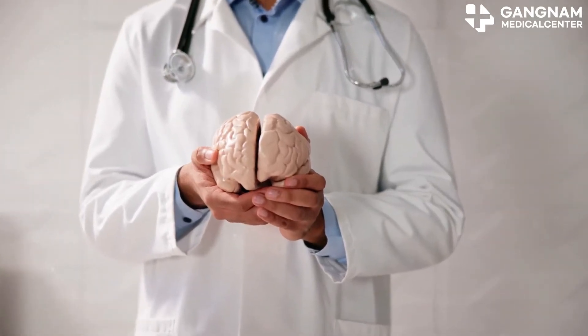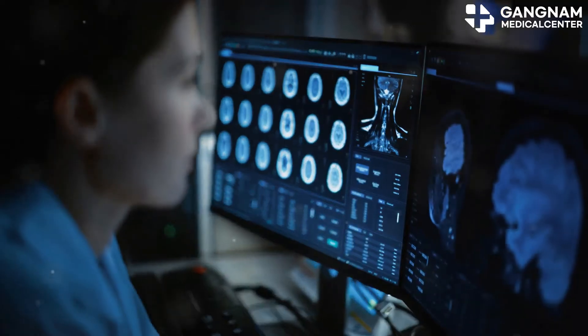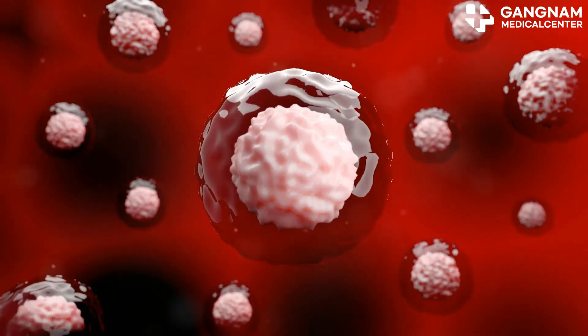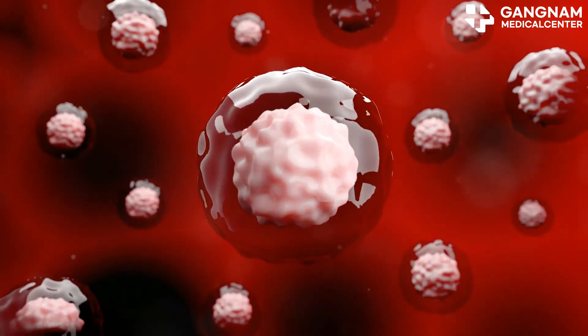Metabolic improvement is another intriguing aspect. Dementia patients often suffer from metabolic disorders, affecting the brain's energy supply. Stem cells can help regulate these processes, ensuring the brain gets the energy it needs to function properly.